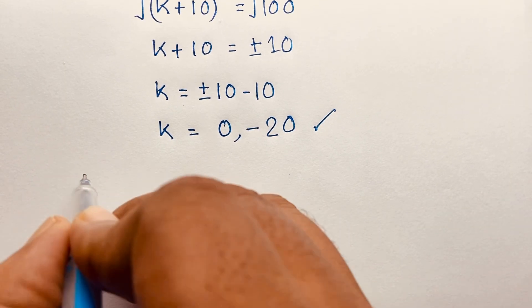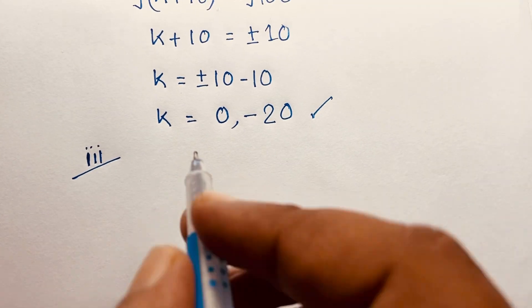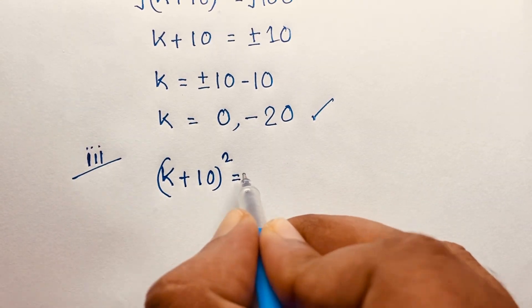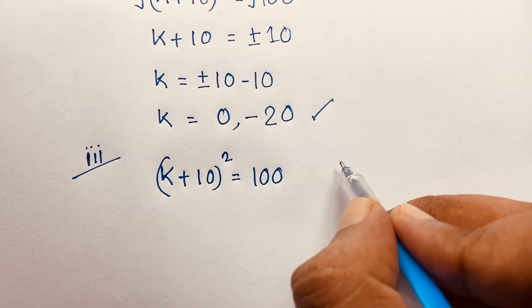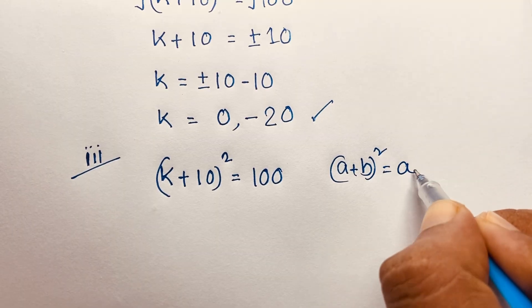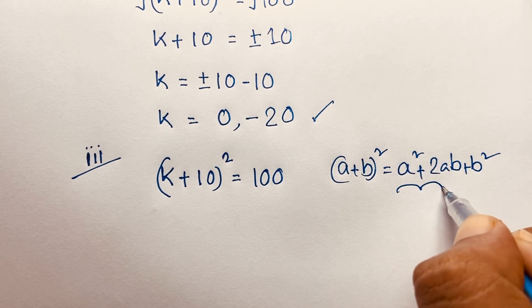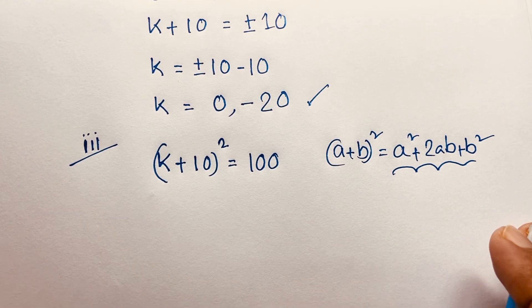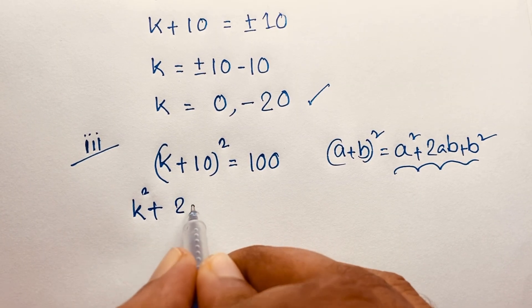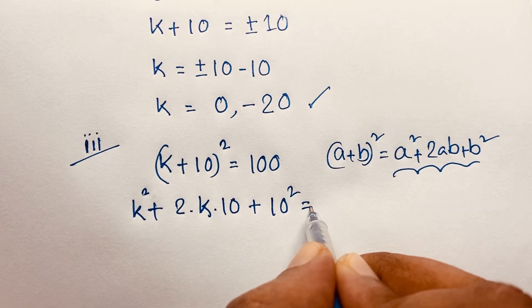Now I solve this question using the third method. Our question is (k + 10)² = 100. We know that (a + b)² = a² + 2ab + b². Applying this math formula here, it becomes k² + 2(k)(10) + 10² = 100.